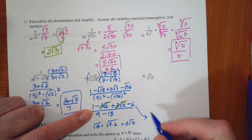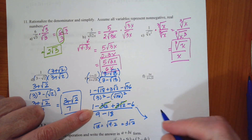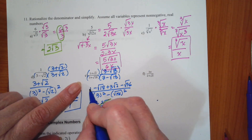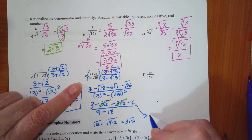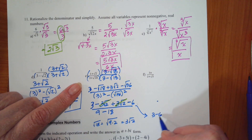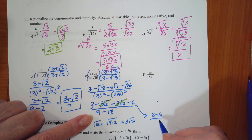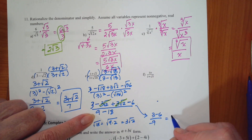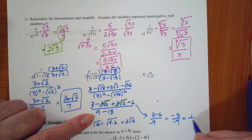So this becomes 1 minus 6 — actually, 1 times 3 is 3 — so this becomes 3 minus 6 divided by negative 9. That's negative 3 over negative 9, which is 1 third.